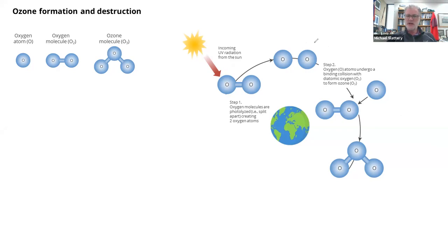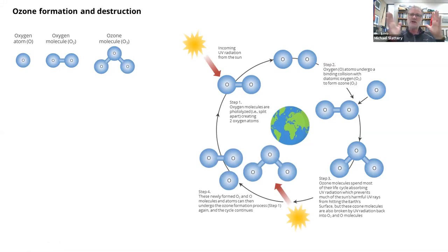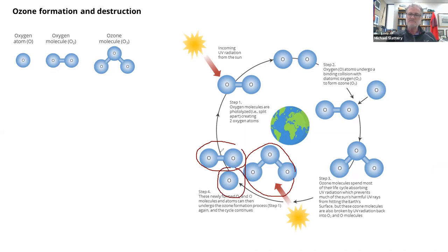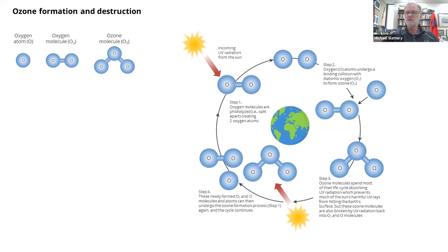That's the natural process: sunlight strikes oxygen, breaks it apart, and individual oxygen atoms combine with O2 to form an ozone molecule. Simultaneously, on an ongoing basis, incoming solar radiation also splits apart ozone molecules into diatomic oxygen and individual oxygen atoms. So UV light is continuously breaking apart oxygen molecules and creating ozone, and breaking apart ozone molecules and creating oxygen — a natural, ongoing cycle.